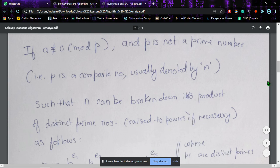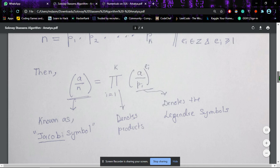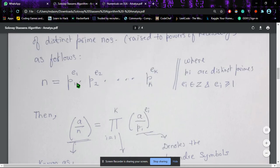Such that n can be broken down into products of distinct prime numbers raised to powers if necessary. For example, suppose n was equal to 15, so 15 you can write as 3 raised to 1 times 5 raised to 1. That is one example where n is your composite number which can be written as powers of distinct prime factors.